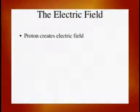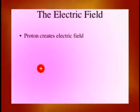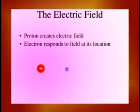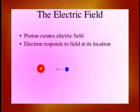The electric field works the same way. A proton with its positive charge creates an electric field in its vicinity — illustrated by a pinkish-purple glow in the picture. If an electron finds itself in that field, it responds to the field at its location: the field points to the left and exerts so many newtons of force for every unit of charge. The electron responds and experiences a force in that direction. This sounds abstract now, but I'll continue using the electric field concept throughout this module.